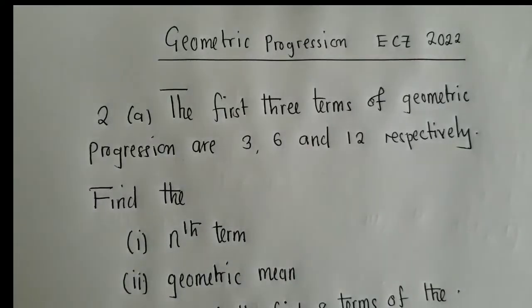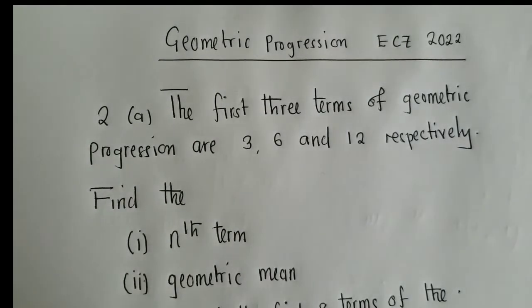This is C-chamber Jacob. Alright, so I've got this question with me, and this question came in 2022 ECZ paper 2. It's under geometric progression, and the question is question 2a.